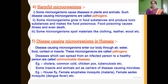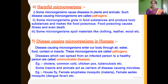Examples of communicable diseases include cholera, common cold, chicken pox, and tuberculosis. Some insects and animals also act as carriers of disease-causing microbes, transmitting them by different means. Examples of carriers include housefly, female Anopheles mosquito, and female Aedes mosquito — they carry pathogens and transmit them from an infected person to a healthy person. These organisms are called carriers.